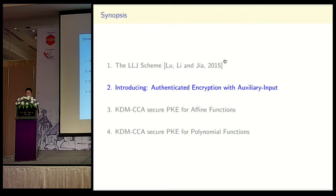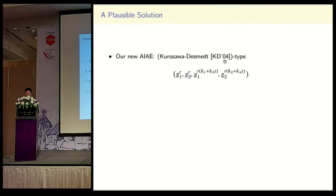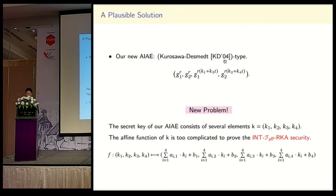We show our approach to KDM-CCA secure PKE by introducing a new primitive called Authenticated Encryption with Auxiliary Inputs (AI-AE). A possible solution is to construct a new AE with a sound INTF-affine security. We build such a new AE called AI-AE following the Kurosawa-Desmedt type. However, a new problem arises: the security game of our AI-AE consists of four elements, and the affine function of K is too complicated to prove INTF-affine RKA security directly.